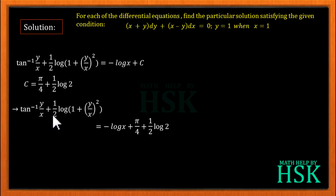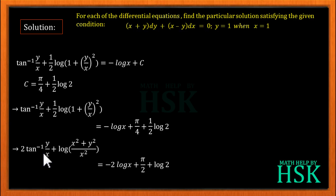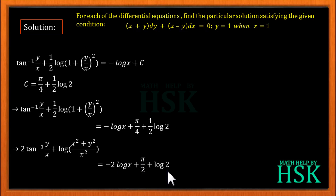Since ½ appears in two terms, I multiply the entire equation by 2 to get: 2 tan⁻¹(y/x) + log((x² + y²)/x²) = -2 log x + π/2 + log 2.